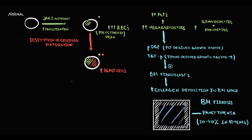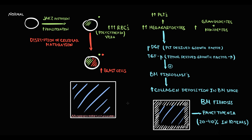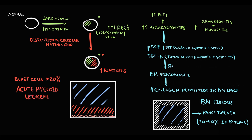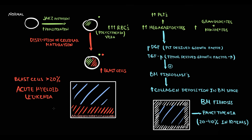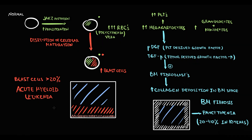The second mutation causes accumulation of blast cells in the bone marrow, which basically crowd out normal cells. The state when the amount of blast cells becomes greater than 20% of all cells in the bone marrow is called acute leukemia. In this case, because myeloblasts accumulate, it is called acute myeloid leukemia. The transformation of polycythemia to acute myeloid leukemia occurs in 5–10% of all patients within 10 years.